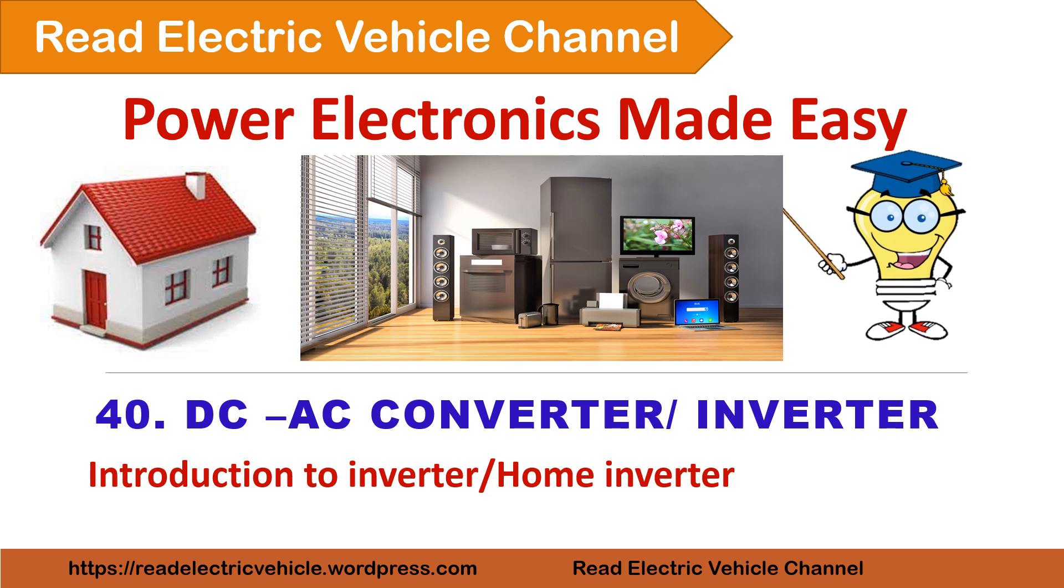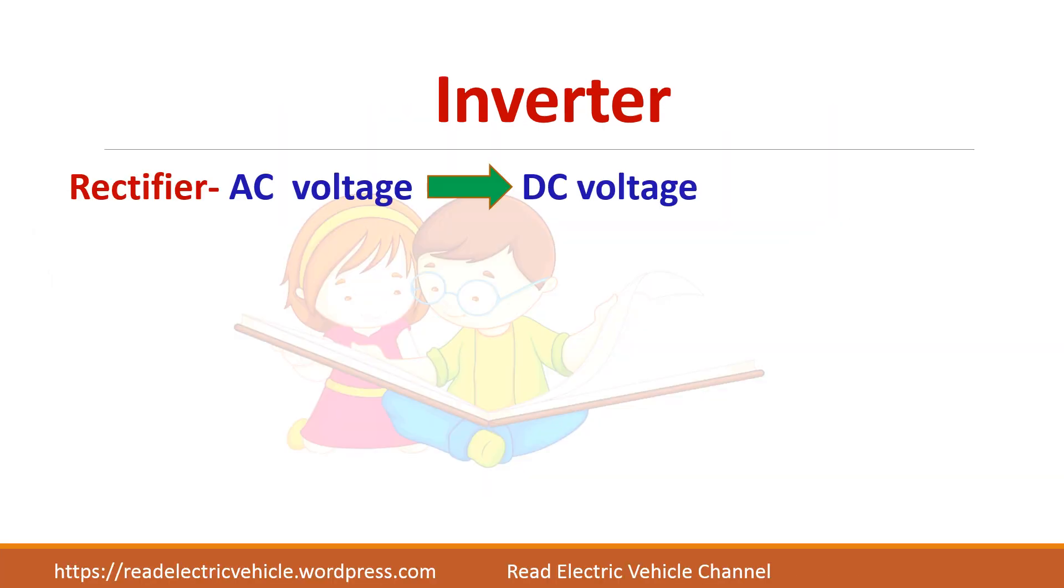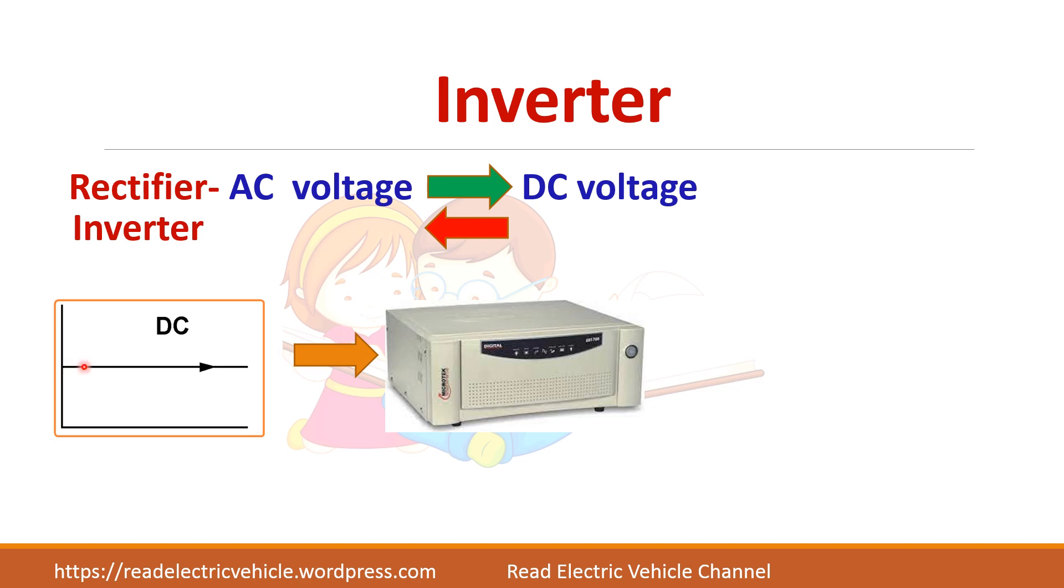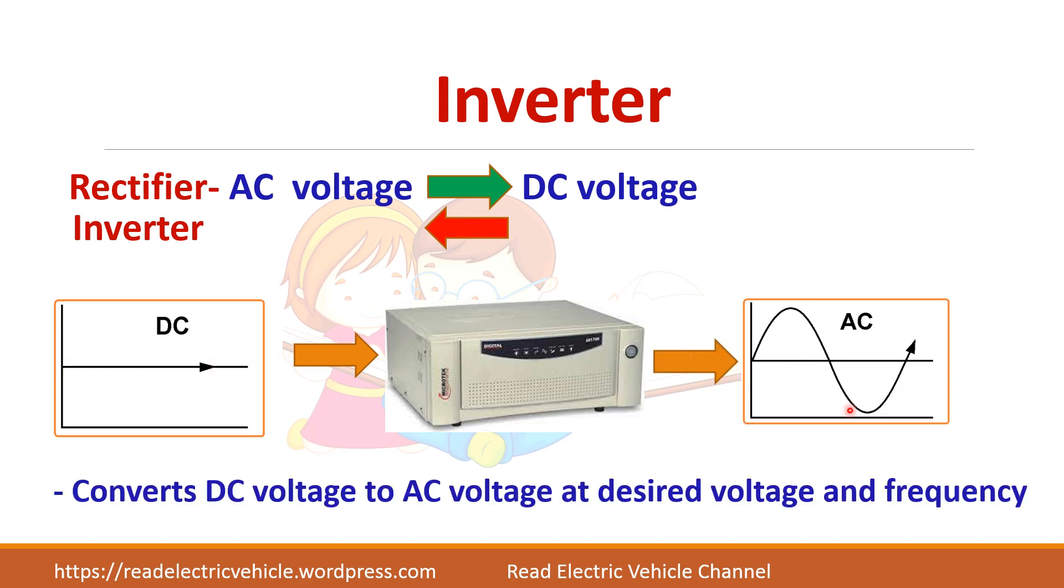In this video we will be seeing about the basics of an inverter or a DC to AC converter. What is a rectifier? It converts AC voltage to DC voltage. If you do the inversion process, that is convert DC voltage to AC voltage, we call it as an inverter. So if I give a DC input I will get an AC output of particular magnitude and frequency. I can change the parameters here to get a different frequency output.